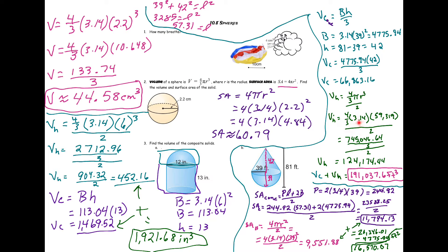So once again, plug everything in. Our cubed becomes 59,319. So just multiply four times 3.14 times 59,319, get this, then do the division by three, then do the division by two, and you get 124,174.44.